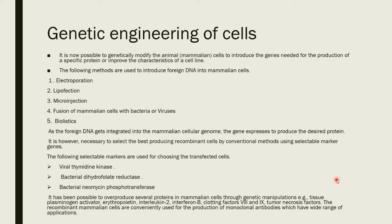Genetic engineering of cells: we can introduce a gene into the cell to produce a desired protein. There are different methods for introducing foreign DNA into mammalian cells. The first is electroporation, a technique in which an electric field is applied to the cell to create pores. These are transient pores — created for a short time and then the cell recovers — through which the DNA can enter the cell.